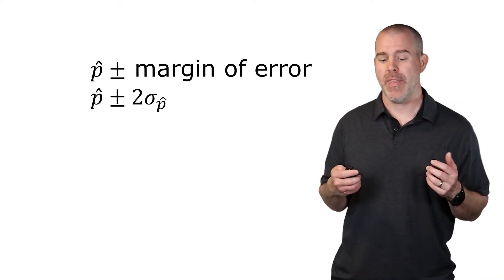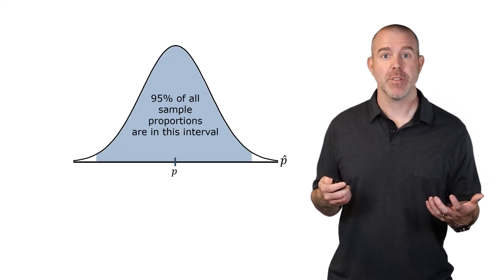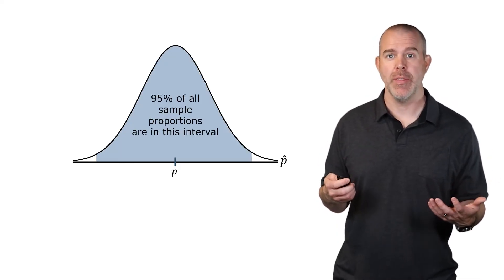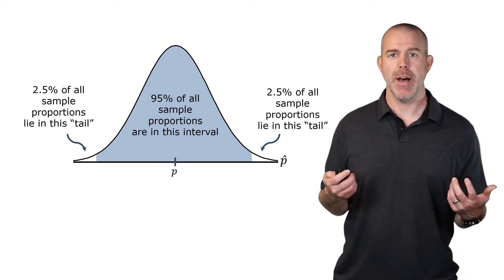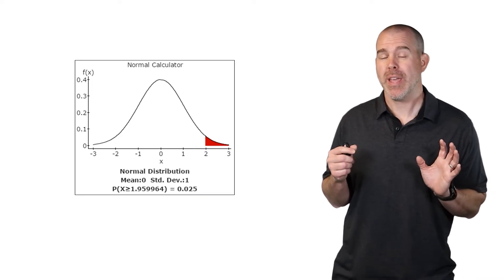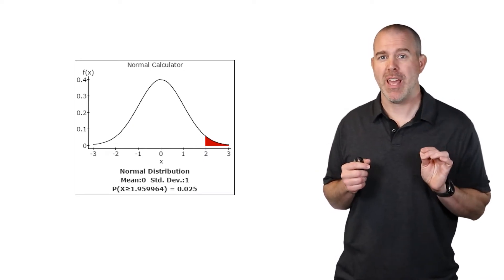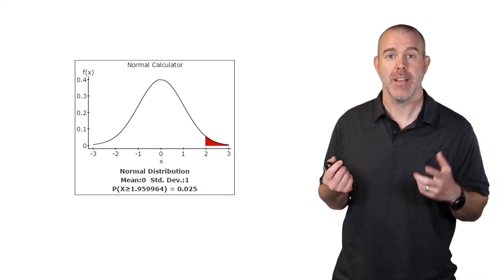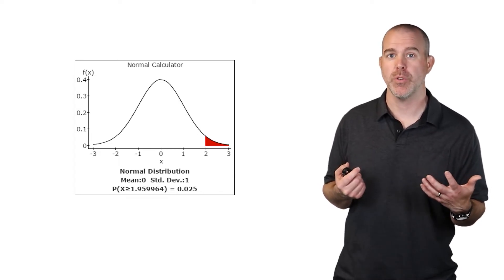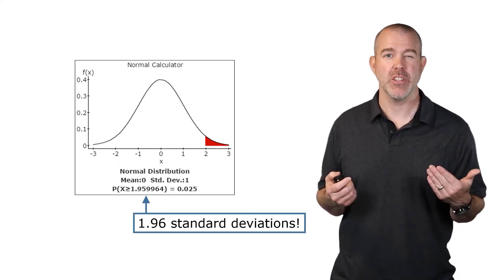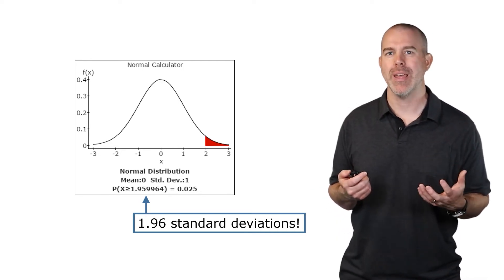We've been focusing on two standard deviations, but that isn't always what we want. Looking at the distribution more carefully: 95% of all sample proportions should be within that range, meaning 2.5% below and 2.5% above. On the normal calculator, the Z corresponding to 2.5% in the tail is about 1.96 — that's where the approximate '2' from the empirical rule comes from. It means 1.96 standard deviations, not exactly 2.